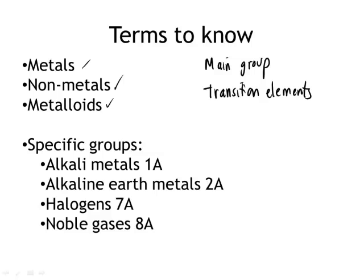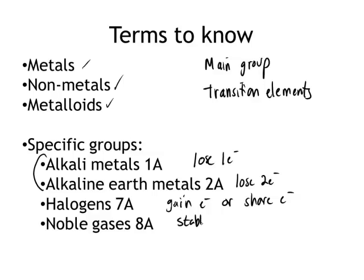You need to know a few specific groups: the alkali metals, 1A; alkaline earth metals, 2A; halogens, 7A; and noble gases, 8A. We can also talk about how those specific groups gain, lose, or share electrons in order to form compounds. The alkali metals, as in all metals, will lose an electron, but they lose one electron to form compounds. The alkaline earth metals lose two electrons. The halogens are non-metals, and they gain electrons to form compounds, or share electrons. The noble gases often don't form compounds. They're actually very stable all by themselves without gaining, losing, or sharing electrons, although they do occasionally.